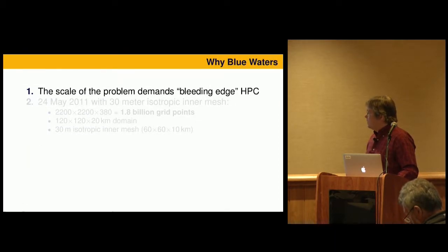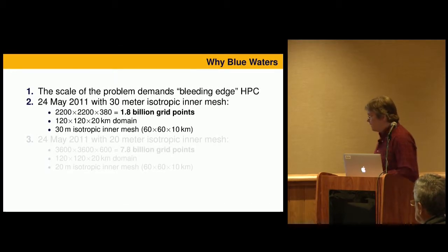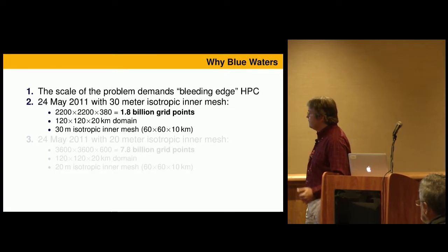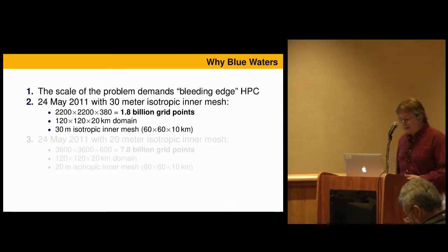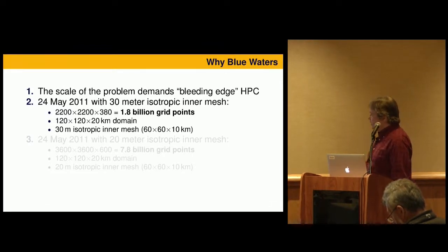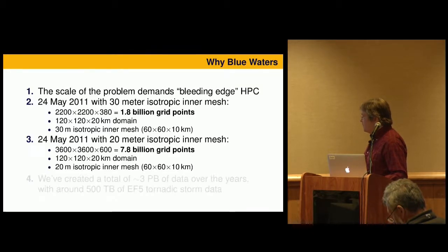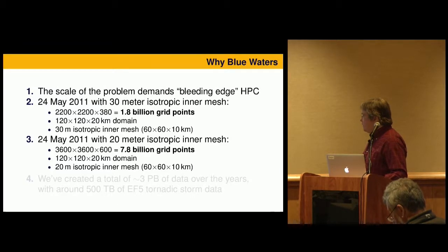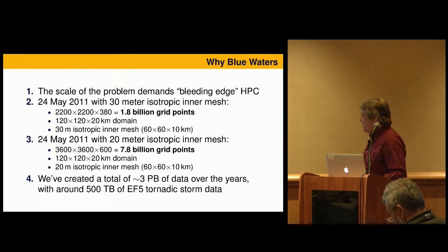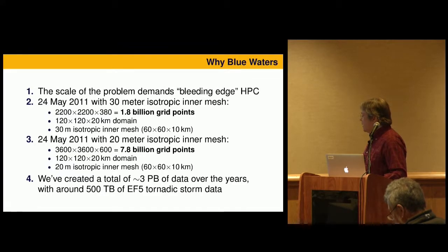So why Blue Waters? The scale of the problem just demands it. When you double the resolution, it takes 16 times more computation — it's a very steep curve. The 30-meter resolution simulation I'll be talking about has about 2 billion grid points. We've done some simulations at 20 meters and even higher, getting up to about 8 billion grid points — you're using about a quarter of the machine. We've created about 3 petabytes of data over the years, and we've got about half a petabyte that contains high-end tornadoes.